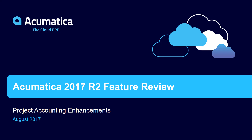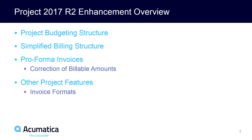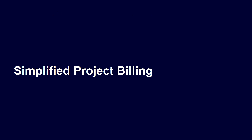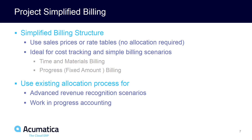Project accounting enhancements in Acumatica 2017 R2. In this video we'll look at the simplified billing structure that is now available with Acumatica projects. Simplified billing allows you to quickly create and modify projects. It greatly simplifies the setup and maintenance because allocation steps are no longer required. This is very useful for certain scenarios, but you can use existing scenarios for advanced revenue recognition and complex work in progress accounting.